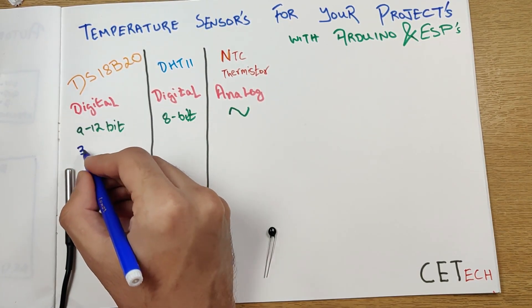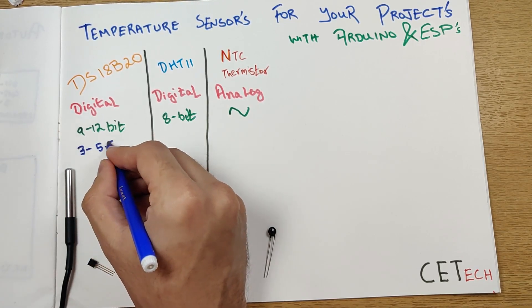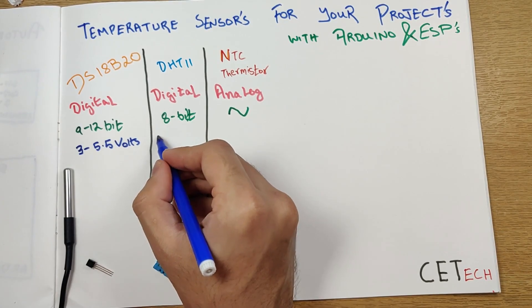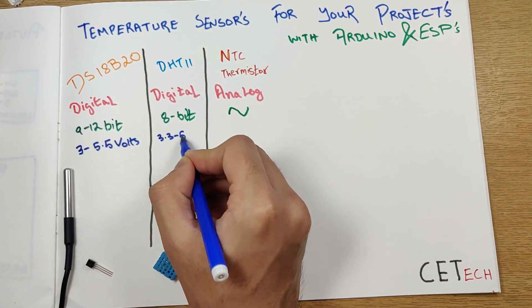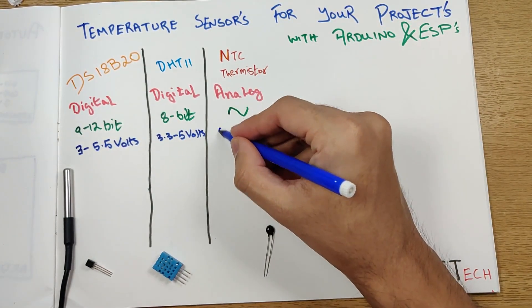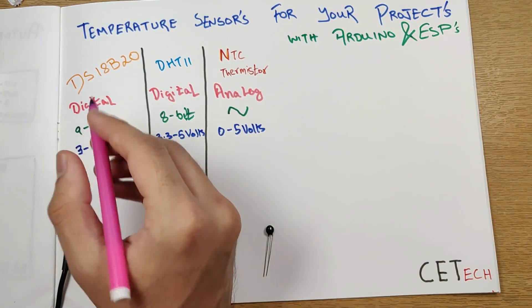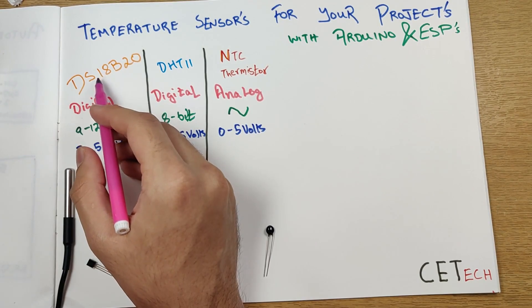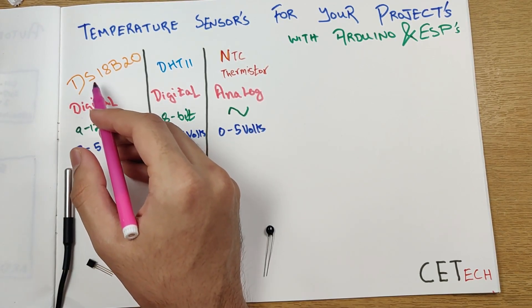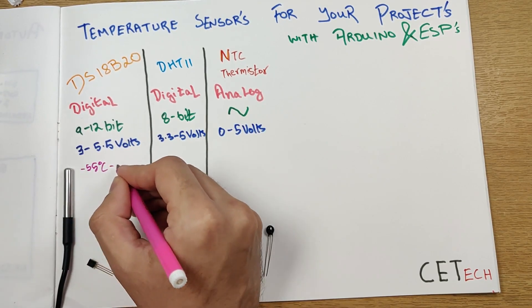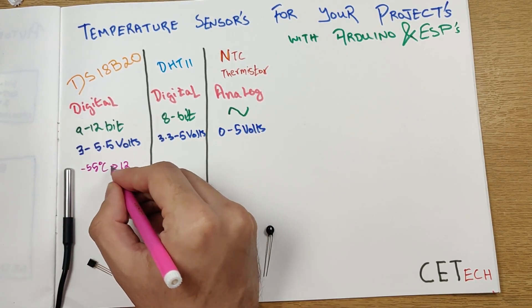Moving on to the technical specification, the DS18B20 operates on a voltage range of around 3 to 5.5 volts, while the DHT11 operates on 3.3 volts to 5 volts, and the NTC thermistor operates from 0 to 5 volts.